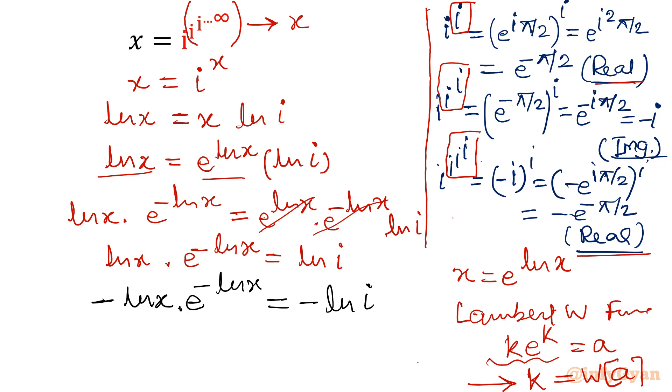Now the concept of Lambert W function will come into the picture. I will write left hand side as minus ln x directly, and right hand side would be W Lambert function of minus ln i.